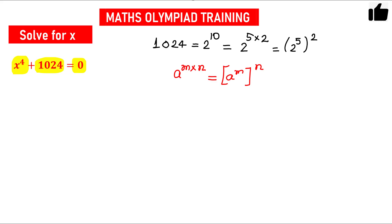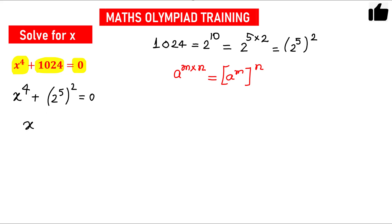So let us plug this in and see what we can do. We have x⁴ plus (2⁵)² equals 0. Now one term is already in the form of a whole square, so let us convert the second term as well. We can rewrite x⁴ as (x²)², so the equation becomes (x²)² plus (2⁵)² equals 0.